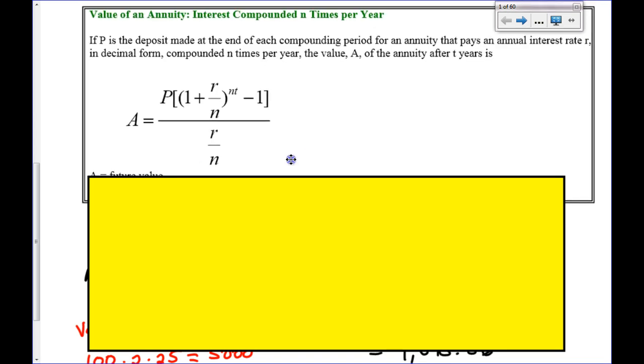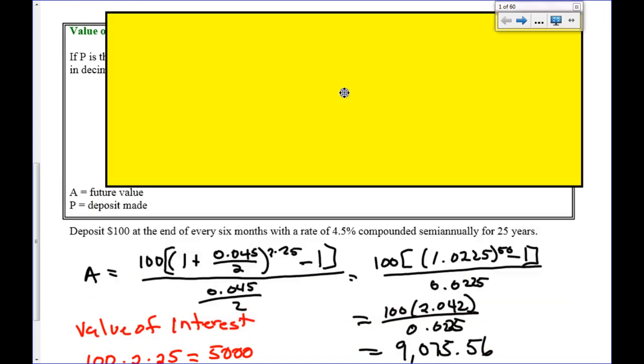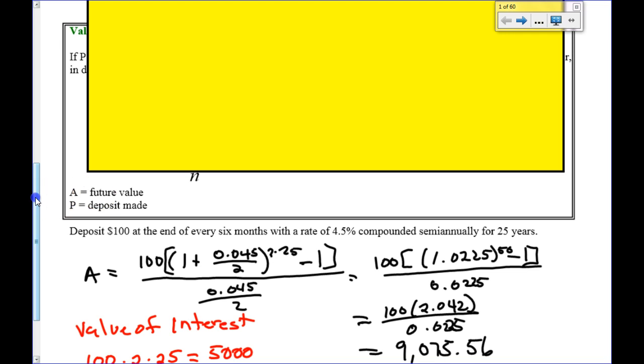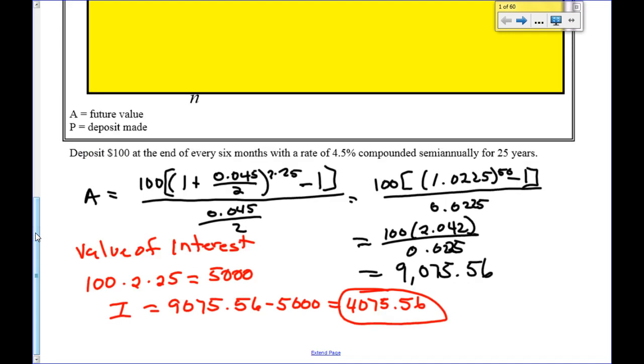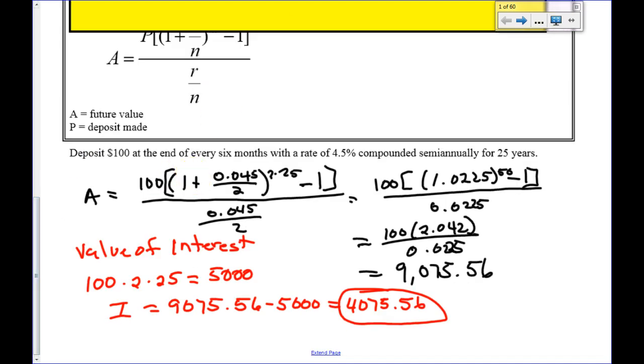So, what you should have gotten, oops, I'm moving this all over the place, is this. Now, look at only the stuff in black right now. The stuff in black is what you should have gotten. And it says that after the end of 25 years, when you put in $100 every six months, you should have gotten $9,075.56.